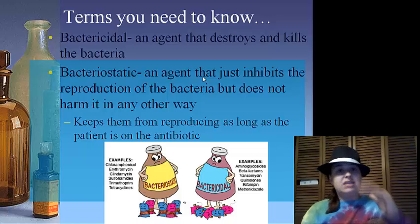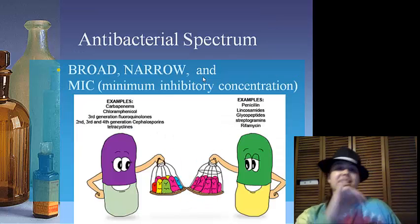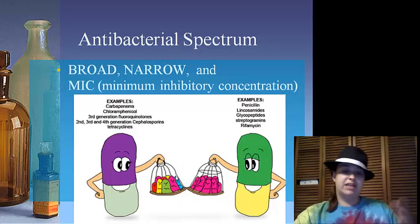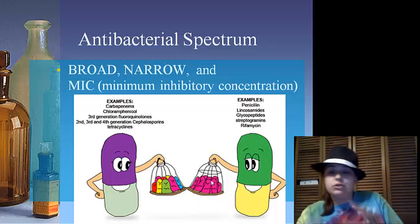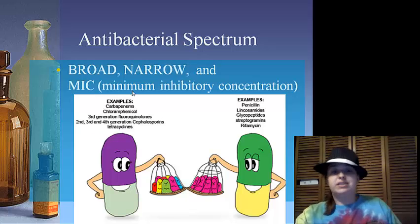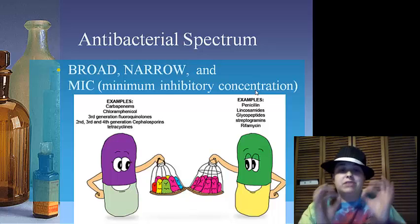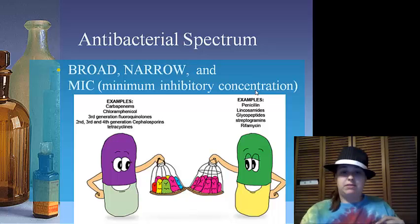Once they go off of it, bacteria can then grow and grow. So, the antibiotic spectrum: we have broad spectrum antibiotics, which can go ahead and kill multiple different types of bacteria. We've got narrow spectrum that only kill maybe one or two specific bacteria. And then we have MIC, or minimum inhibitory concentrations, which is the minimum amount needed to inhibit the growth of the bacteria. Those are the three things you need to know for the spectra.